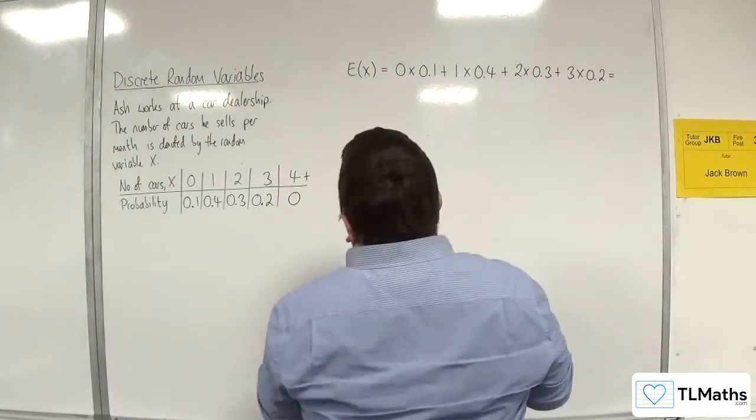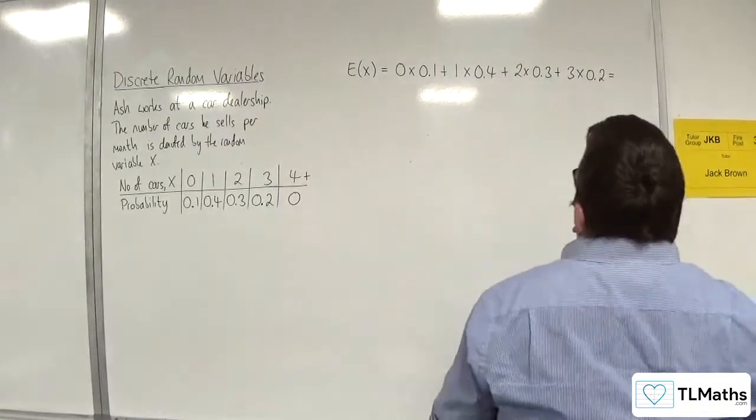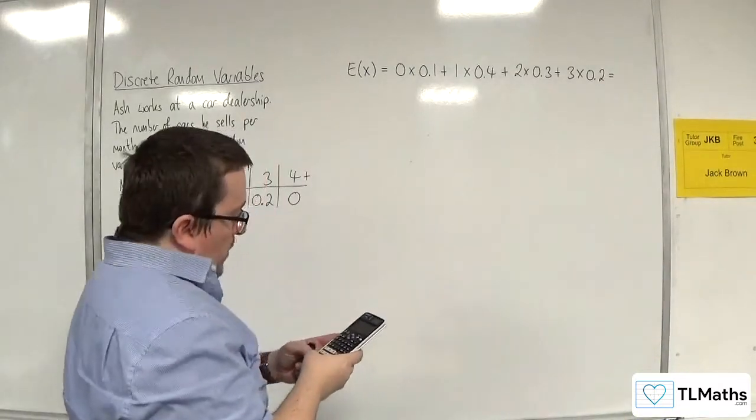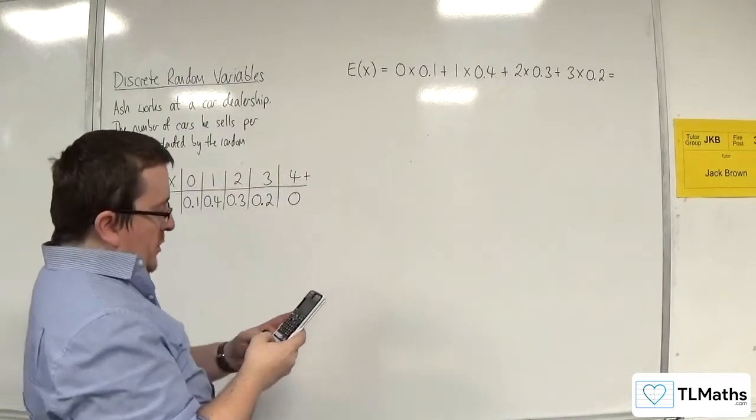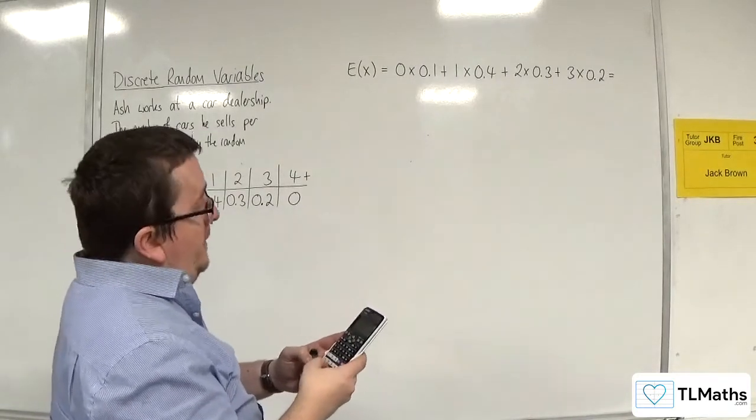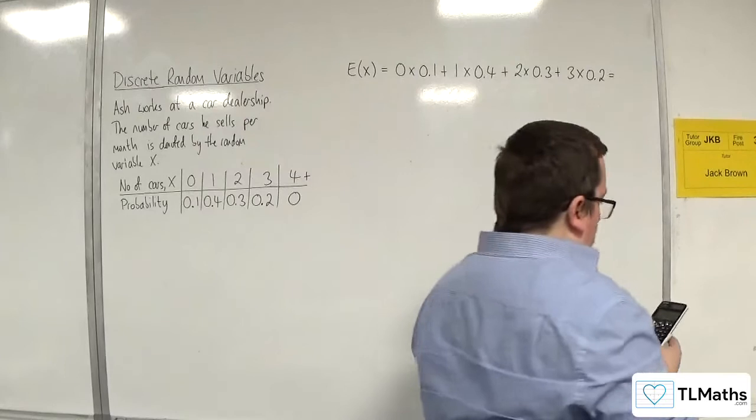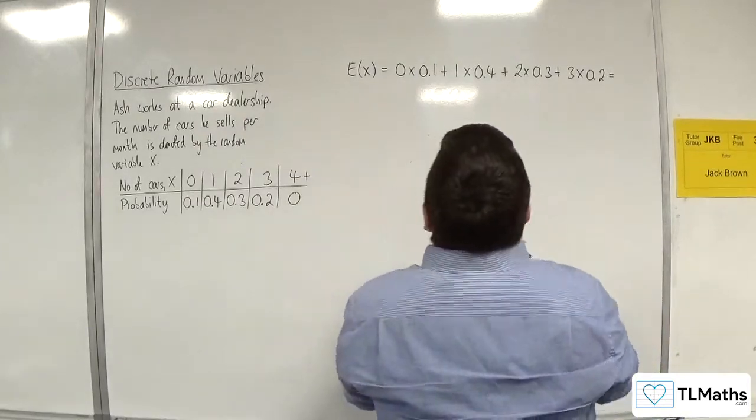And everything else after that is going to be 0 anyway. So, we don't need to think about that. So, we have 1 lot of 0.4, 2 lots of 0.3, and 3 lots of 0.2. So, we get 1.6.